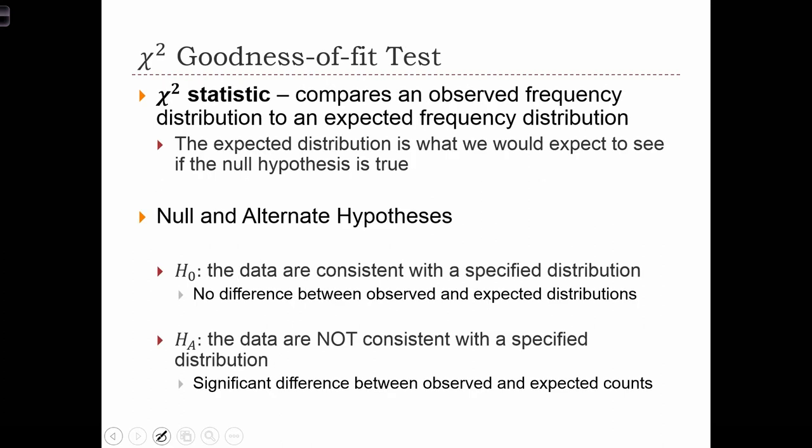Generally speaking, the chi-squared statistic is used to compare an observed frequency distribution to an expected frequency distribution. The expected distribution, in this case, is what we would expect to see if the null hypothesis is true.